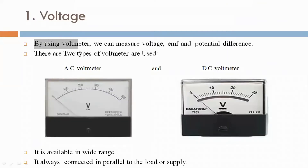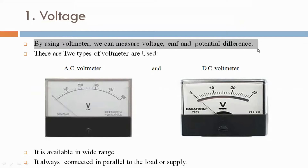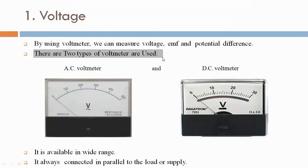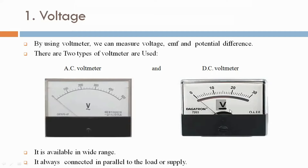By using a voltmeter we can measure voltage, EMF, and potential difference. There are two types of voltmeter used: AC voltmeter and DC voltmeter. It is available in a wide range. It is always connected in parallel to the load or supply.